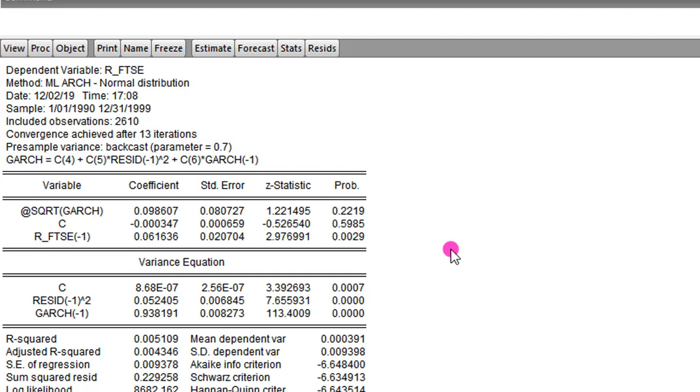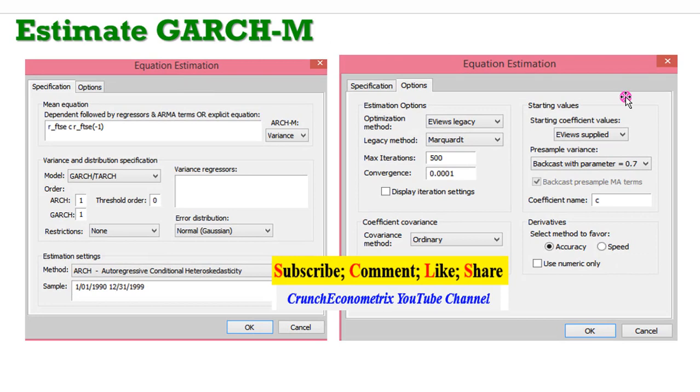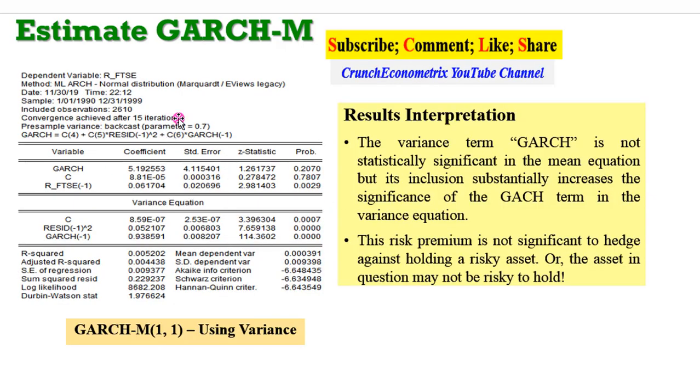Let's go back to PowerPoint for more explanation. So this is the specification I used. Remember to change the HM from none to variance. And my optimization method is E-views Legacy. So this is for the variance equation. And here is a result that we got. We saw that the conditional variance term in the main equation is statistically not significant. 21% approximately here. So what do we conclude?